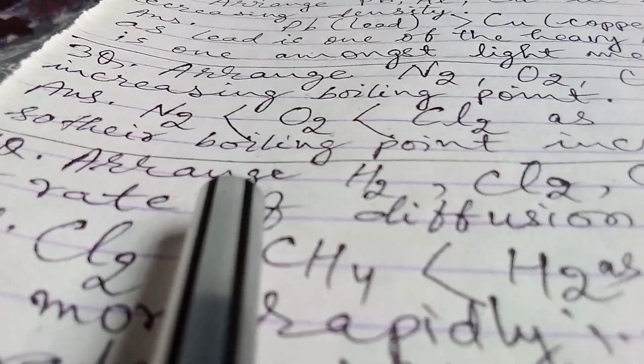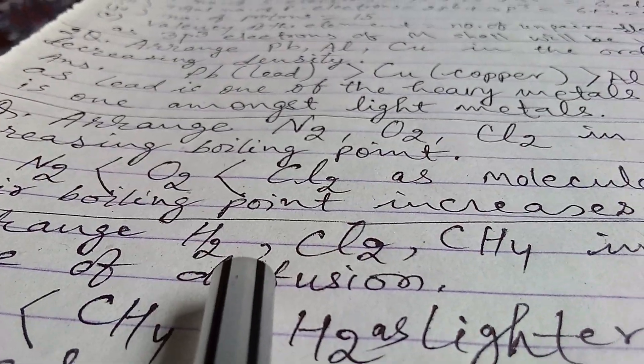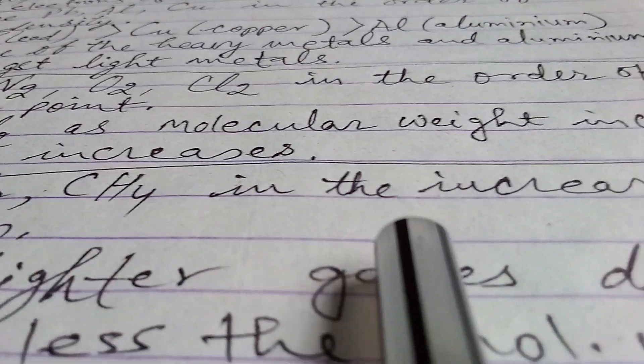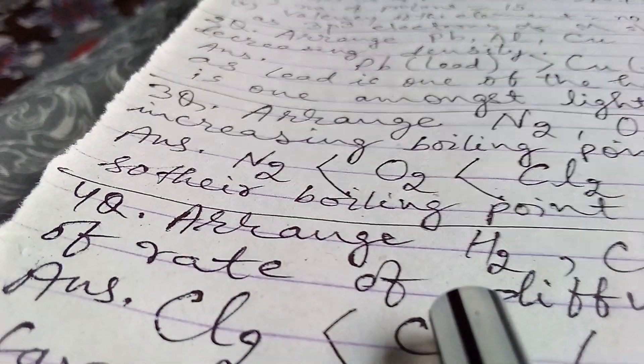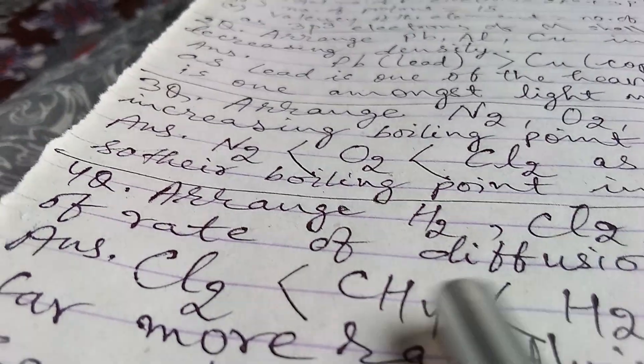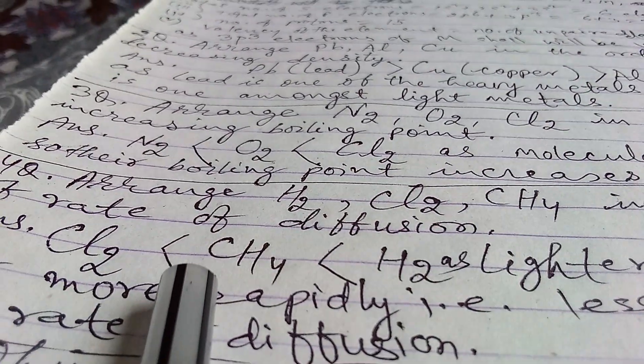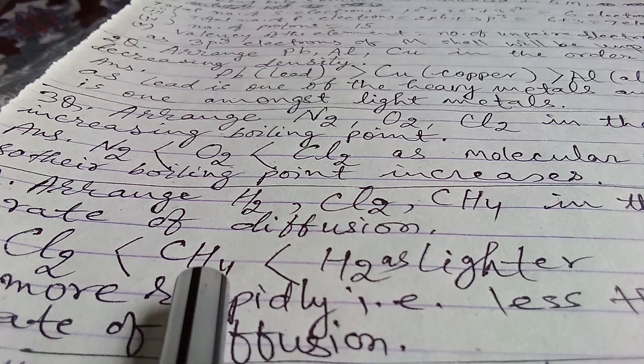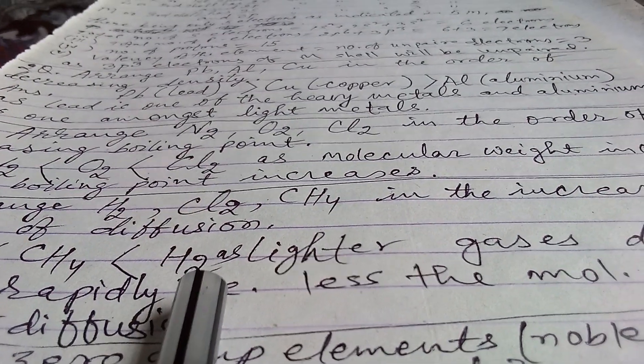Fourth question is: arrange H2, Cl2, CH4, that means hydrogen, chlorine and methane, in the increasing order of rate of diffusion. So the answer is Cl2's rate of diffusion is less than that of methane, and methane's rate of diffusion is less than that of hydrogen.